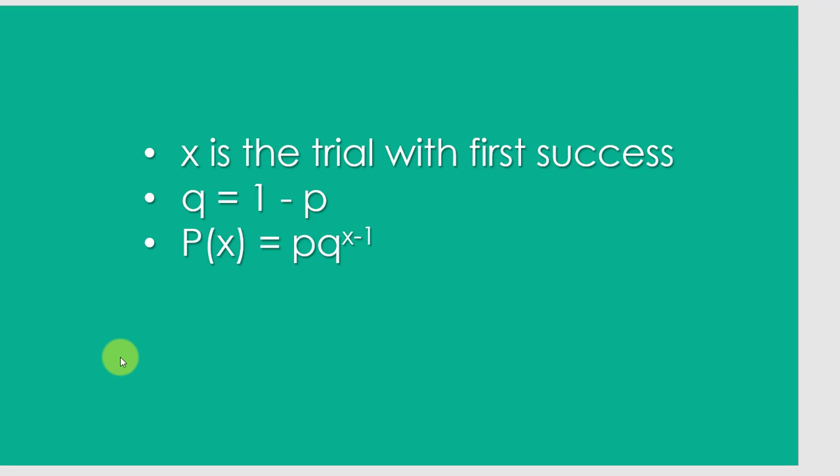We're not really going to get into the math behind the geometric, but just remember that we're looking at x, where x is the trial where we have our first success. p is constant, that's the probability of any given shot, any given trial, and q is 1 minus p again.